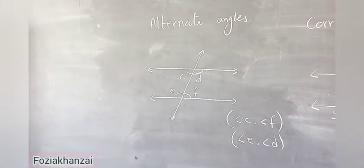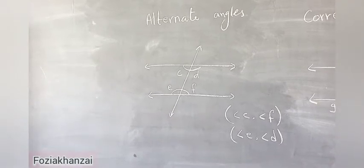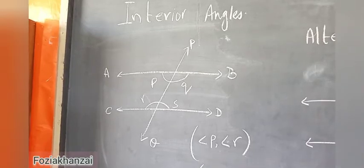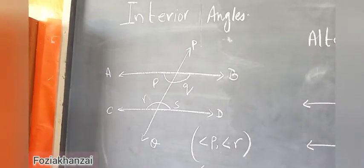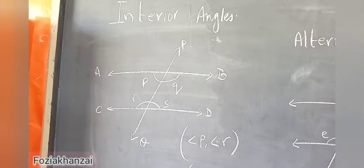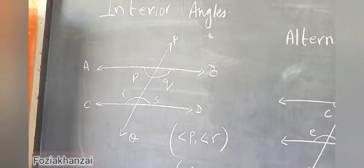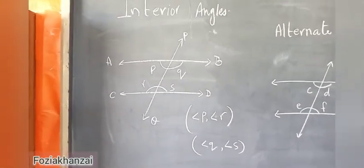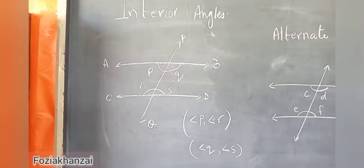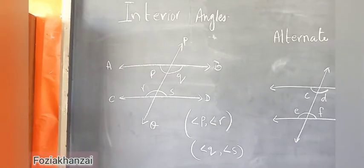Clear — the concept of alternate angles, corresponding angles, parallel lines, and transversal line. Now the next heading: interior angles. Interior means inside angles. We have four angles P, Q, R, S. We draw the same figure — two parallel lines and the third line PQ as the transversal line. Angle P and angle R are both interior angles, inside the transversal line. On the other side we have angle Q and angle S — another side of the transversal line.